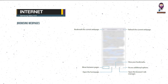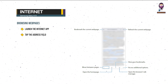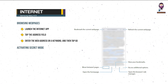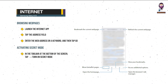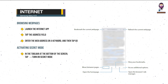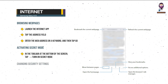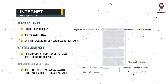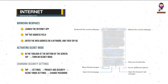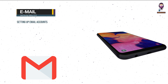Browsing Web Pages: launch the Internet app, tap the Address field, enter the web address or a keyword, and then tap Go. Activating Secret Mode: in the toolbar at the bottom of the screen, tap Turn on Secret Mode. If you are using this feature for the first time, set whether to use a password for Secret Mode. To change security settings, you can change your password or the lock method — tap Settings, Privacy and Security, Secret Mode Settings, Change Password.